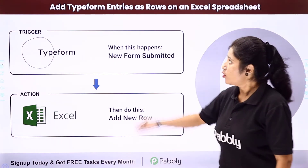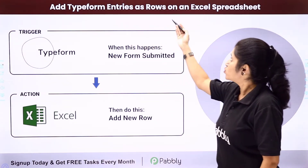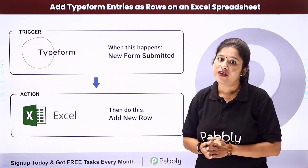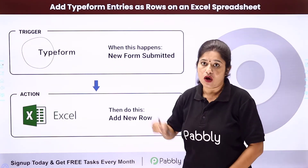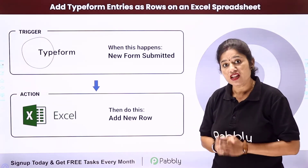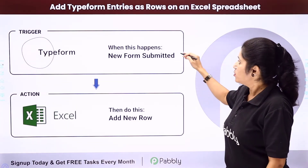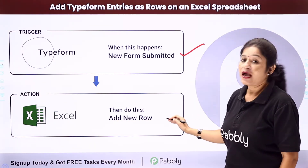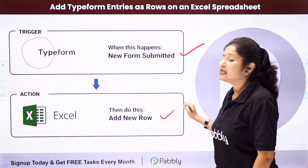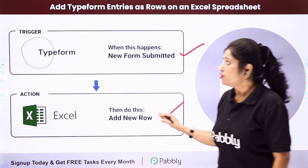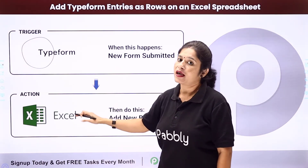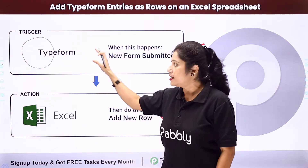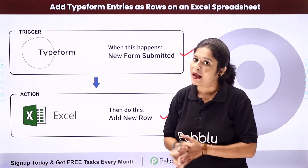In this video, we are going to learn how you can add Typeform entries as rows on an Excel spreadsheet. The idea is that you have created a form using your Typeform account, and whenever the form is filled, automatically using the details of the form submission, a new record should be added as a new row to your Microsoft Excel spreadsheet. For that, you need to integrate your Typeform account with Microsoft Excel using Pabbly Connect.